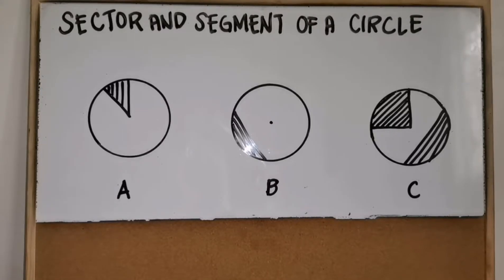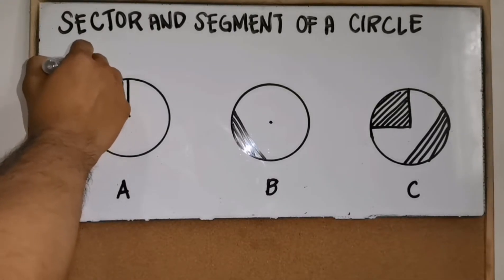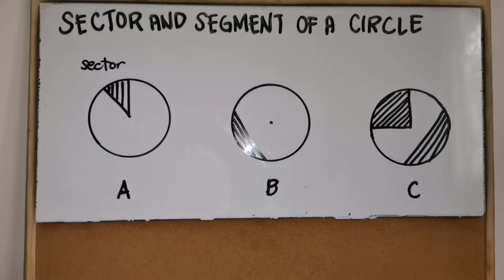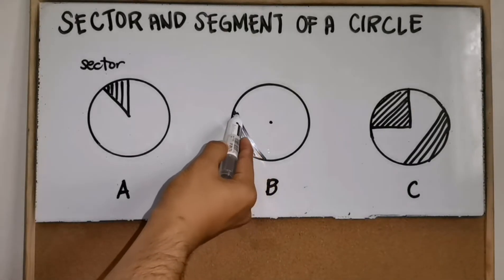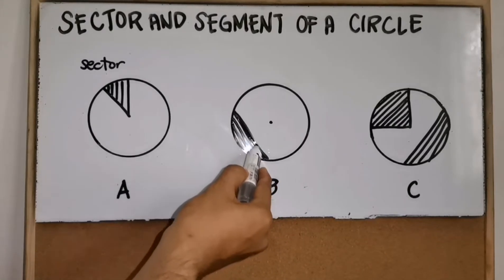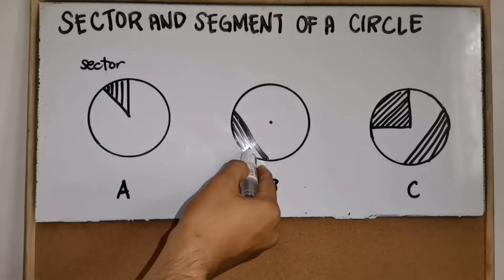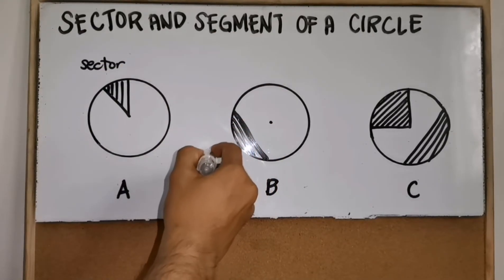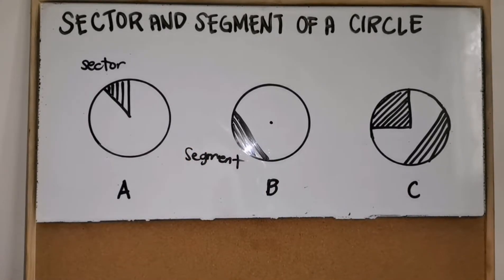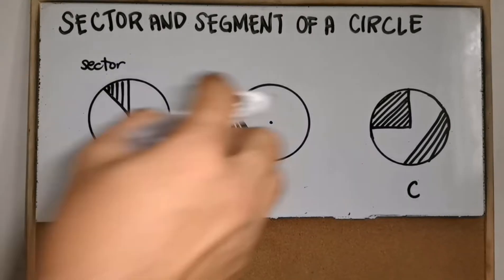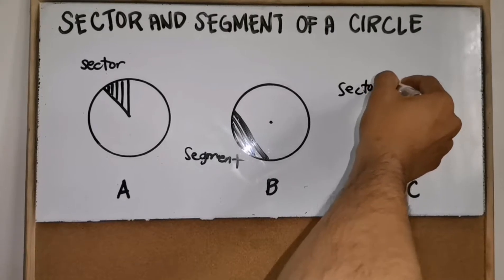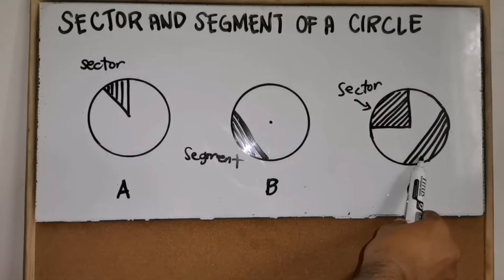Now let's identify the following figures. For figure A, the shaded part is pizza-like, which means it is a sector. For figure B, it is not pizza-like but is a region being cut using a chord, so it is a segment. For figure C, there are two shaded regions: the pizza-like region is a sector, while the other region is a segment.